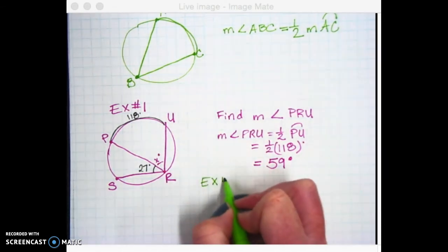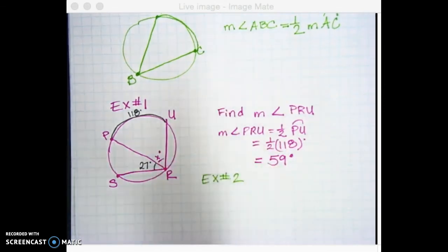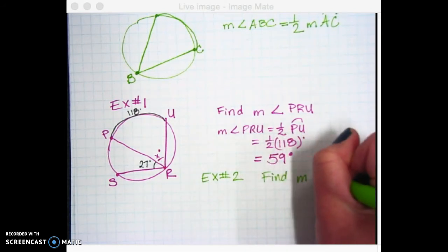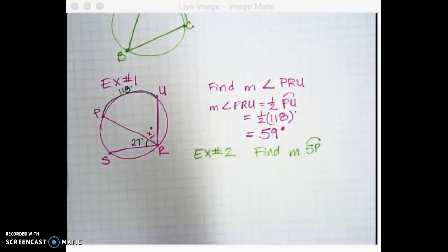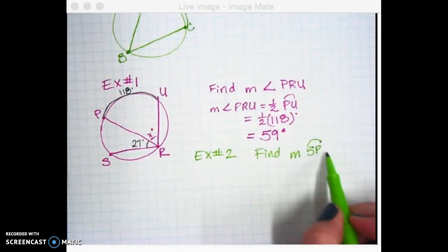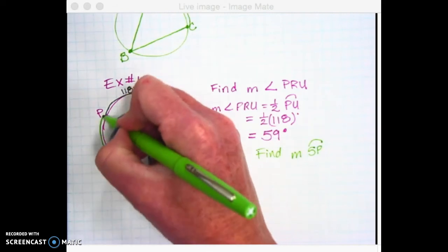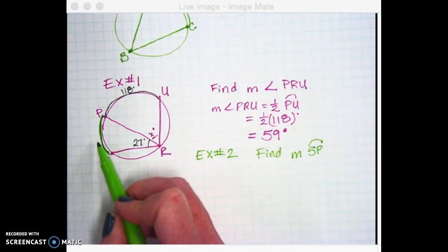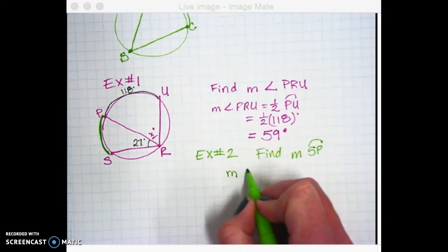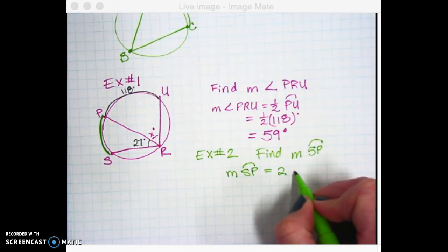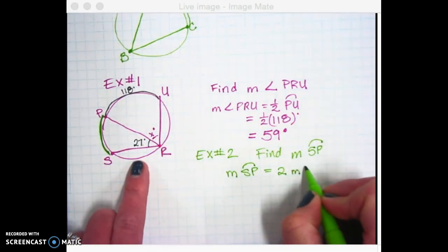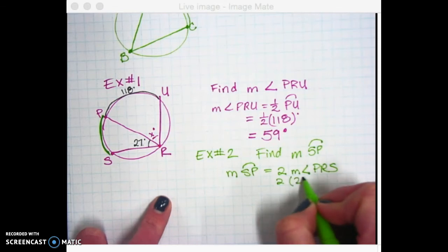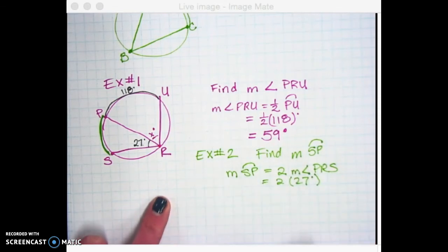Example number two, using that same drawing. This time, we're going to find the measure of arc SP. So you go over to the drawing and you find arc SP. Here's S, here's P. So we want this arc right here. So if we're going from the angle to the arc, do we double it or half it? Double it. So we're going to say that the measure of arc SP is equal to twice whatever this angle in here is, twice the measure of angle PRS. And we know that PRS is 27. So we punch it in the calculator. I got 54.